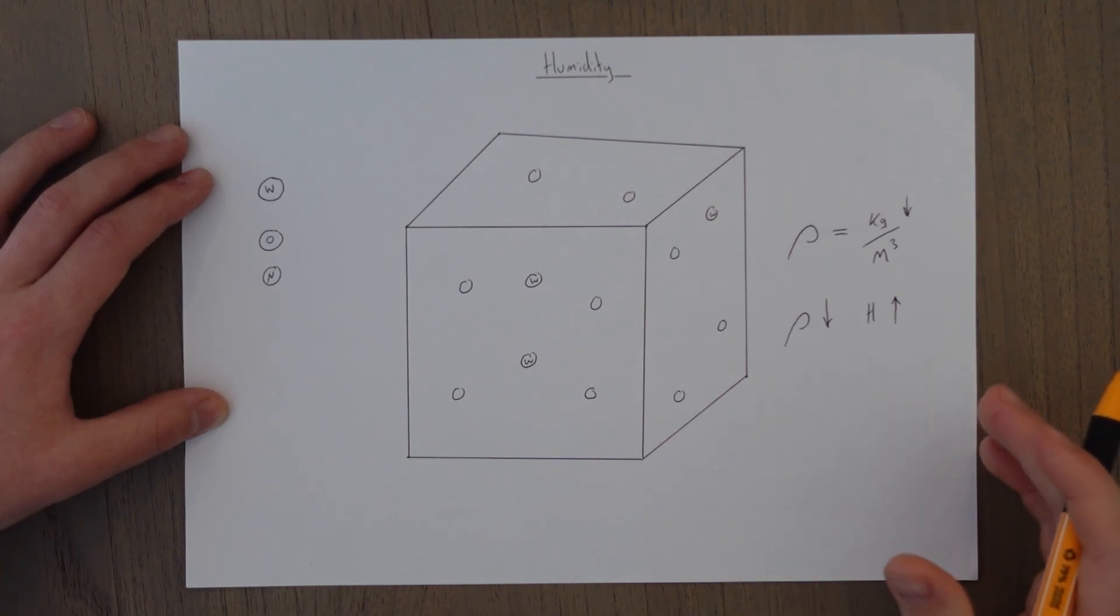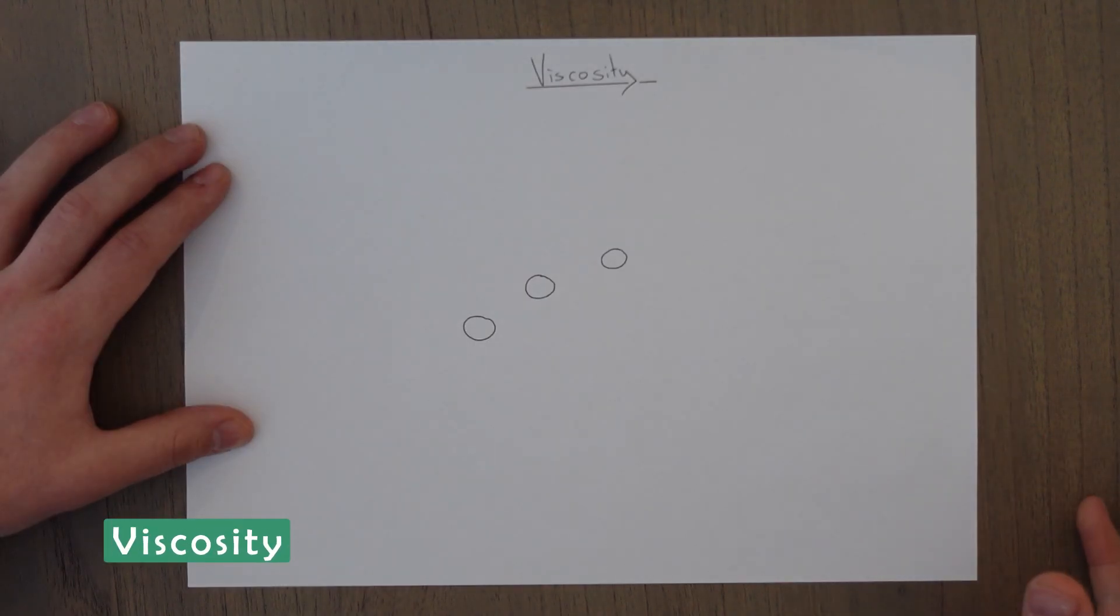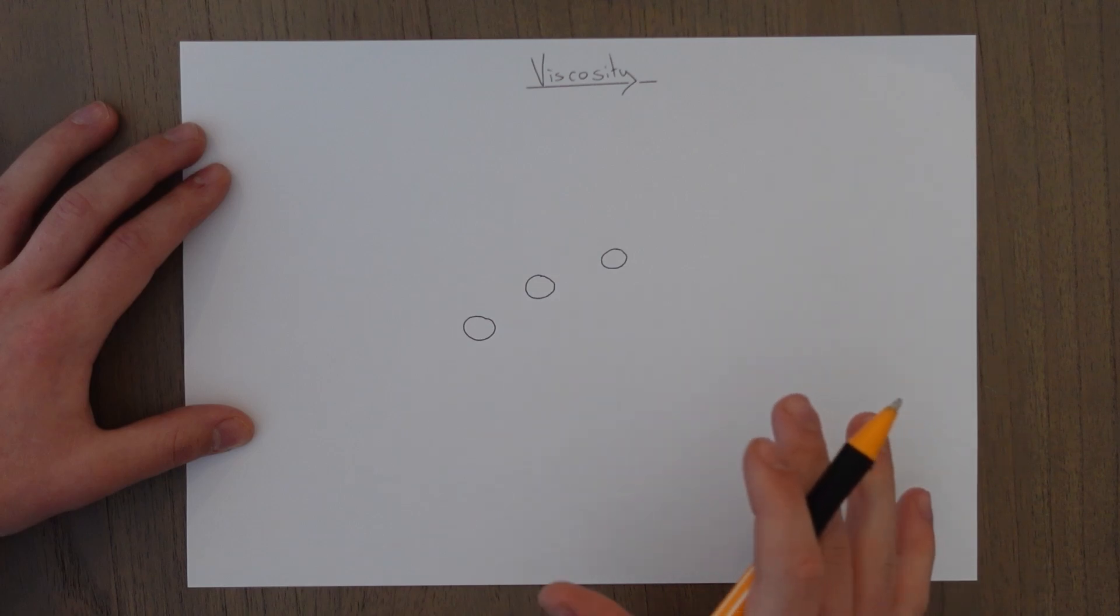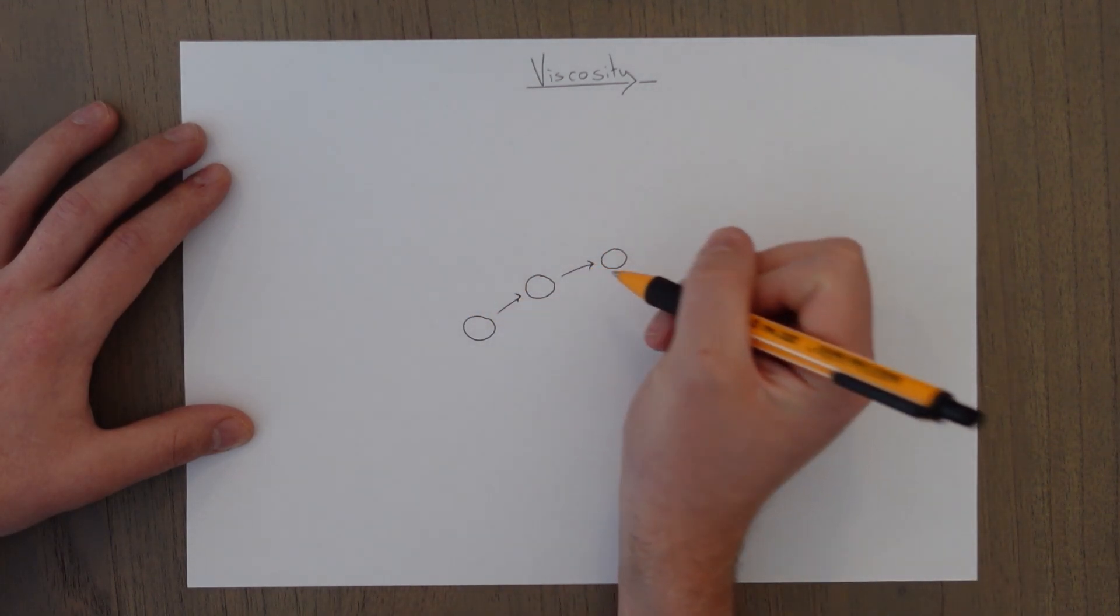The last factor to look at with air is the viscosity of air. Viscosity is basically a measure of the stickiness of something. So water is not very viscous, but honey would be very viscous. It measures how good or bad a fluid is at pulling along other molecules with it as it goes.